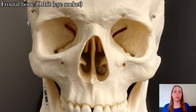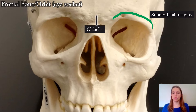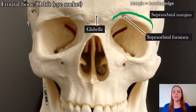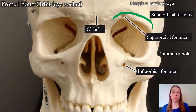We're going to start with the frontal bone and the orbit, which is your eye socket. In between the eyebrows, what you might call your unibrow region, is a little flat space called the glabella. The ridge above your eye socket is the supra orbital margin — the word margin means a border or edge, just like the margin on your paper. Inside the supra orbital margin is a hole called the supra orbital foramen. Below the eye is the infra orbital foramen. Whenever you see the word foramen, you know you're looking at a hole.